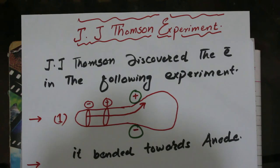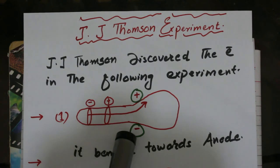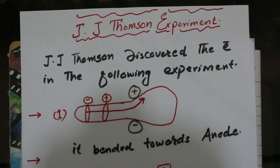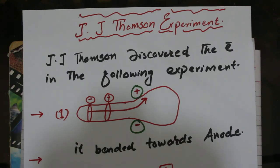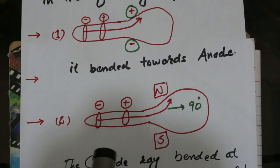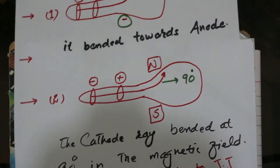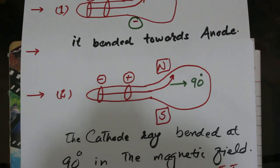Now let's discuss the J.J. Thomson experiment in which he discovered the electron. First, he passed these cathode rays through a strong electric field and found that the rays bent towards the positive plate, meaning they are negatively charged. Second, when he passed these cathode rays through a strong magnetic field, he found that the rays bent at 90 degrees to the magnetic field.